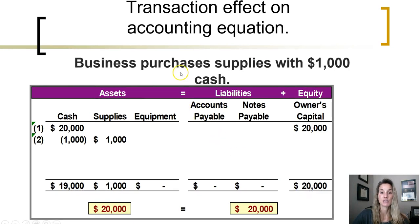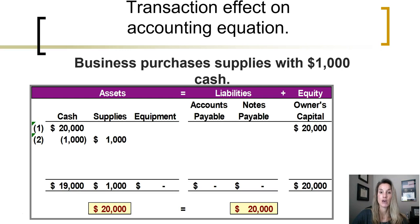The next transaction: the business purchased supplies with $1,000 in cash. Before this transaction, the company had $20,000 in cash and $20,000 in owner's capital. When the business bought supplies with $1,000 in cash, cash must have decreased because the company used cash to purchase supplies. We record a decrease to cash of $1,000, bringing the cash account down to $19,000. The company bought supplies — an asset — because they will use those supplies to help them operate. It is a resource they own, so they now have more supplies, increasing the supplies account by $1,000.